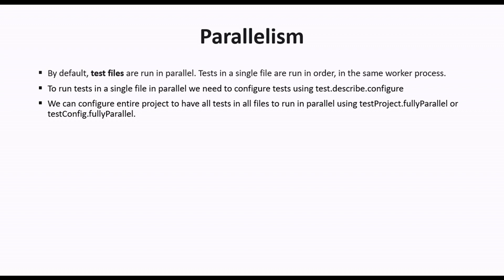We can configure an entire project to have all tests in all files run in parallel by using test project fully parallel, or test config dot fully parallel. We can also configure this from the config file. If we want to disable the parallelism, then limit the number of workers to 1. In that case we need to set the workers value to 1, and it will not run tests in parallel.